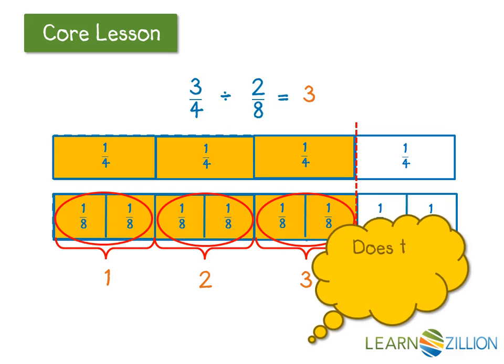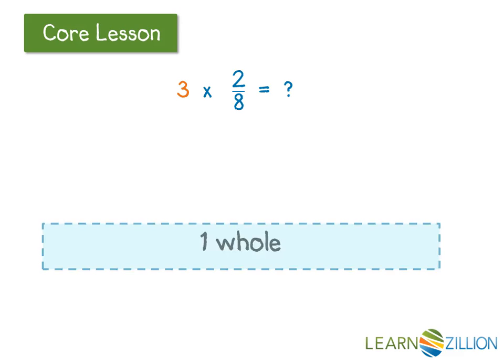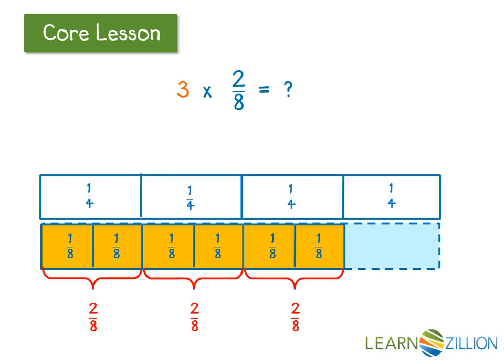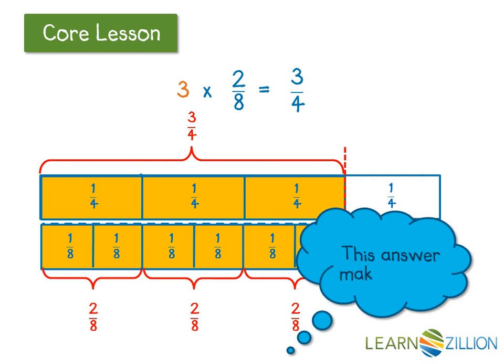Does this answer make sense? Let's use a multiplication sentence to check our thinking. 3 times 2 eighths, or 3 groups of 2 eighths, is equal to 3 fourths. This picture representation makes it easy to see that 3 groups of 2 eighths is equivalent to 3 fourths. So yes, my answer is reasonable.